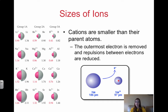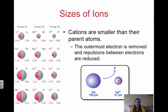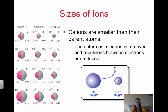Within the metals, the positive ionic radius decreases from left to right. As electrons are lost, the reason it decreases is because the ratio of protons to electrons increases. With a higher ratio of protons to electrons, all of your protons are holding those electrons much more tightly, which brings the size down.